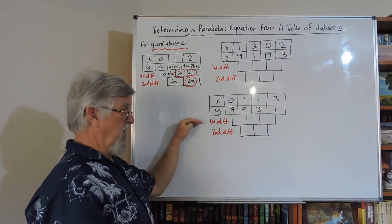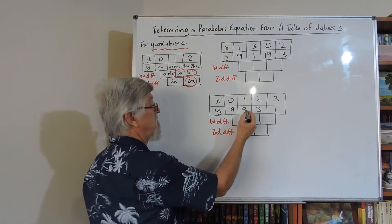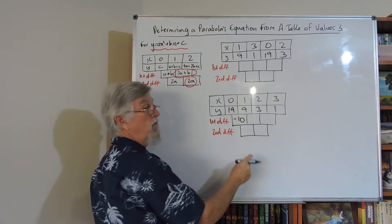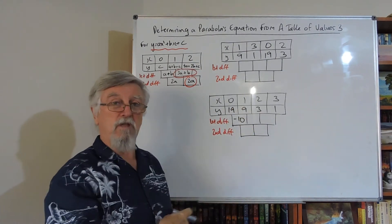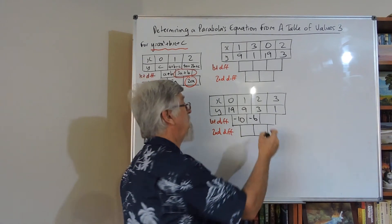You can tell by the first differences at the moment, but they're not going down by the same amount. Let's go to the first differences. 9 take 19 is minus 10. What happened going from 19 to 9 has gone down 10. 9 to 3 has gone down 6. 3 to 1 has gone down 2.